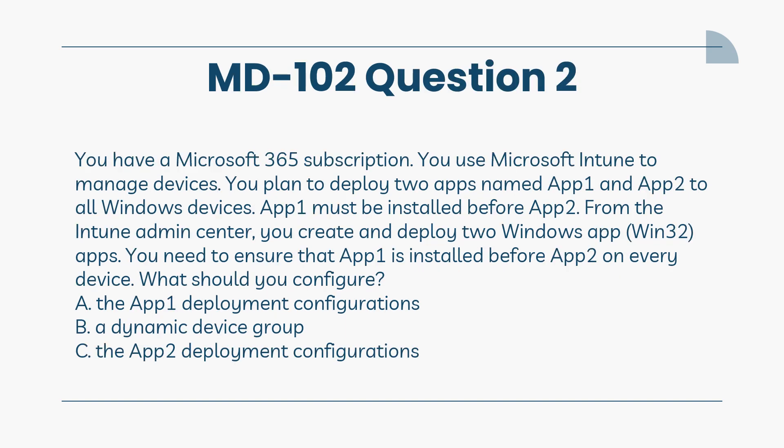You have a Microsoft 365 subscription. You use Microsoft Intune to manage devices. You plan to deploy two apps named App1 and App2 to all Windows devices. App1 must be installed before App2. From the Intune Admin Center, you create and deploy two Windows Win32 apps. You need to ensure that App1 is installed before App2 on every device. What should you configure?